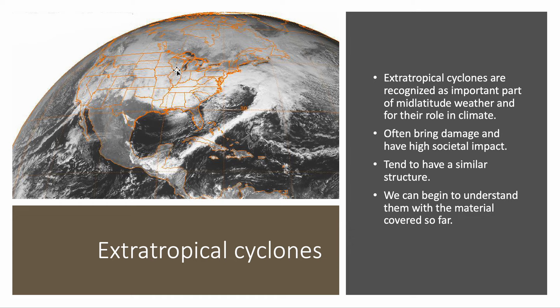Another thing to point out is that extra-tropical cyclones are typically a lot bigger than tropical cyclones. Tropical cyclones are of the order of a few hundred miles, whereas this extra-tropical cyclone extends over thousands of miles — perhaps around one thousand miles or more. The size difference is something we need to take into account. Extra-tropical cyclones can often cover the entire mid-latitudinal band. Now, using what we've learned, we can begin to understand extra-tropical cyclones, which is what we'll do in the next couple of lectures.